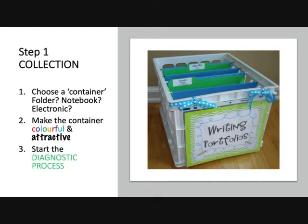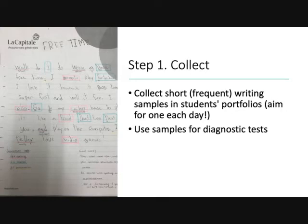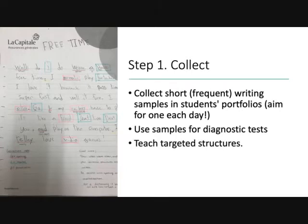Once you have all this collection happening, whether it's physical or electronic, this is when you start the diagnostic process. You've collected your short, frequent writing samples in the portfolios — my suggestion is to aim to write one thing a day — and you take a look at those samples. Are they making common spelling errors? Everybody is spelling 'when' badly, so maybe we need to look at spelling of common words. Maybe it's capitalizations — maybe they're all not capitalizing the letter I. So what is it that a large number of students really need to focus on? You can teach to the class that way, teach targeted structures, or if you get really good at this, you can do it more individually and say to students, 'This is what I want you to focus on for next time. Go find out the rule, figure it out, and then improve.'